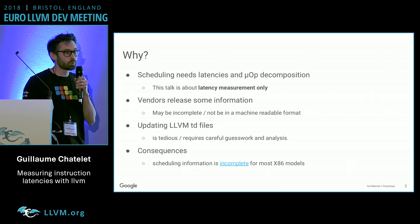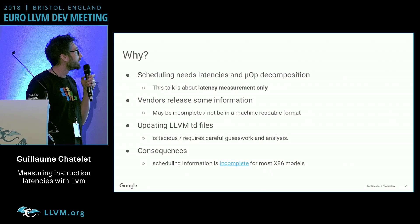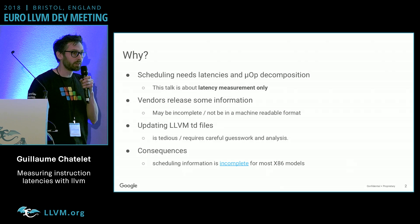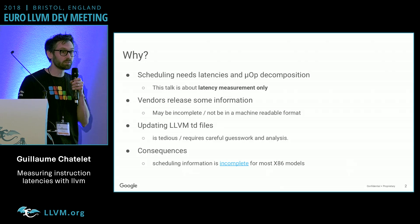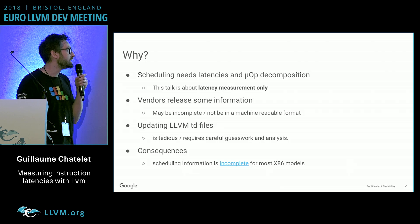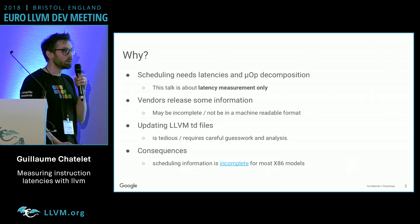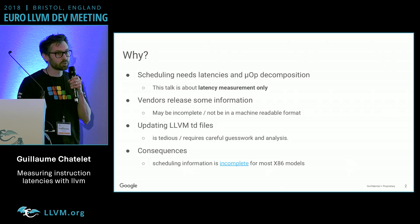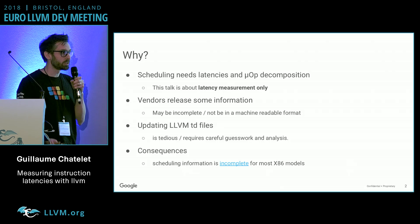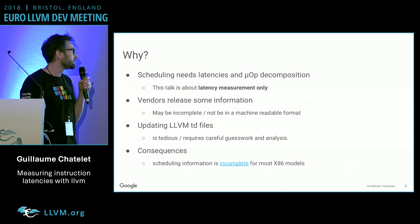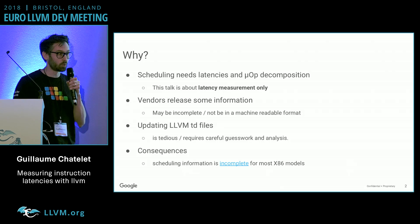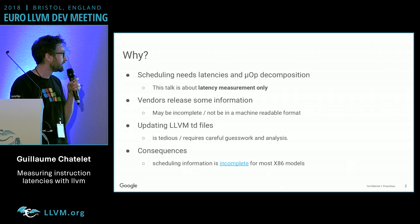Instruction latencies are really core to instruction scheduling, and we want to have the measurements. These values are usually provided by vendors in the form of PDFs, which are not quite easy to parse, and they may be incomplete. Moreover, having the data put into TD files is sometimes not so easy — you need to understand the hierarchy and how it's built. As a consequence, the scheduling model for x86 is not always complete.